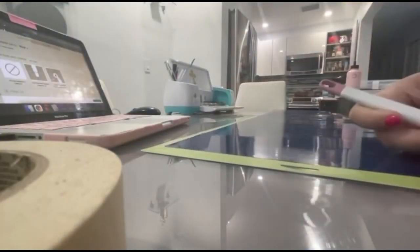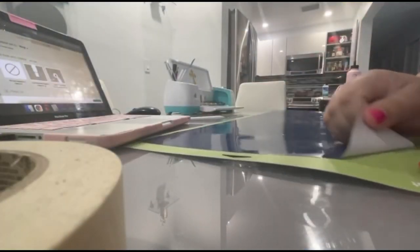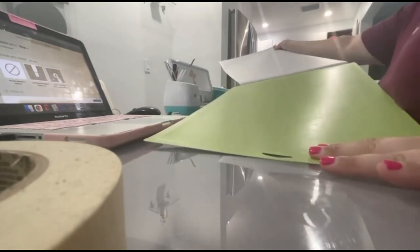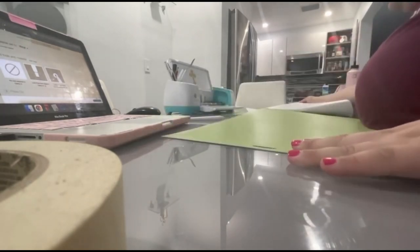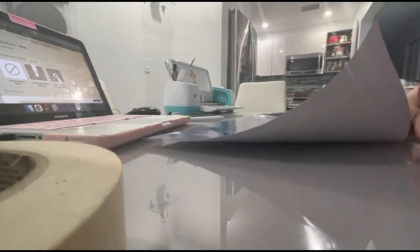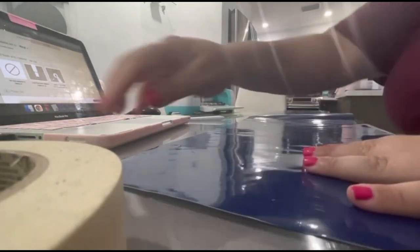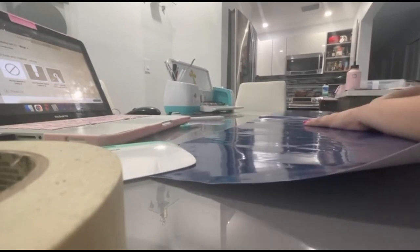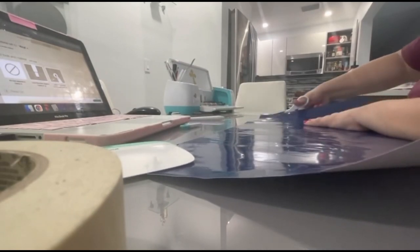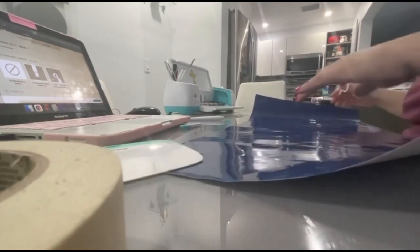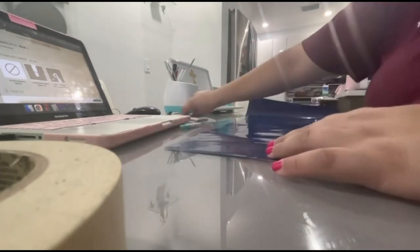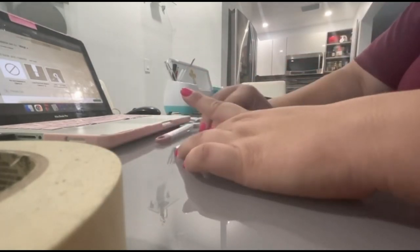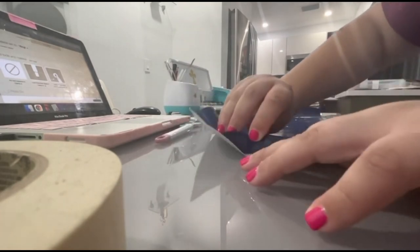After your design is done cutting, you're going to peel it all off the mat. I like to have it all peeled off the mat before I start weeding. Then you're going to grab your weeding tool, which is also from Cricut, and weed off from a corner and pull from there. Also weed any center of the letters, like if you have any letter D's like I do in this name, or any O's.